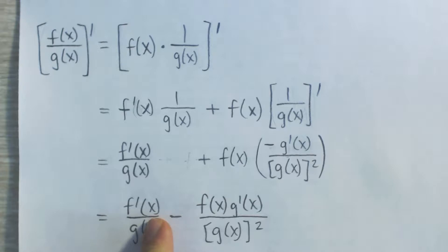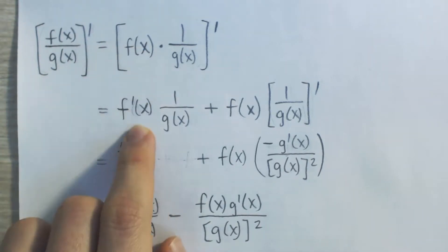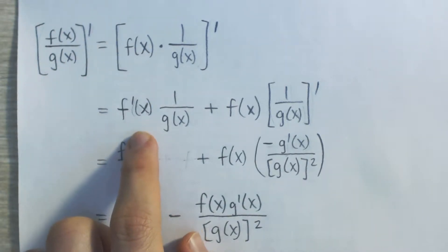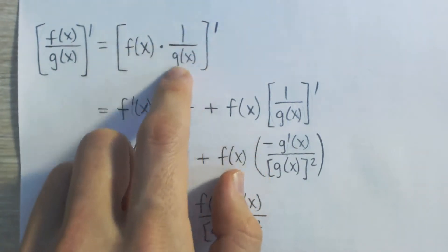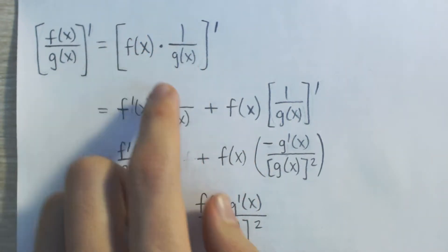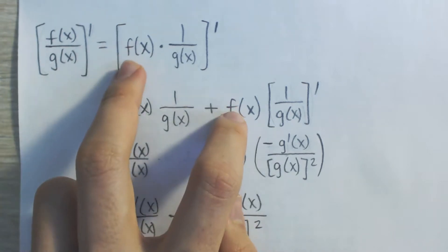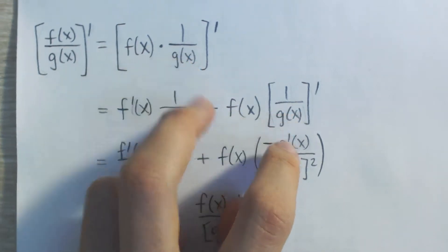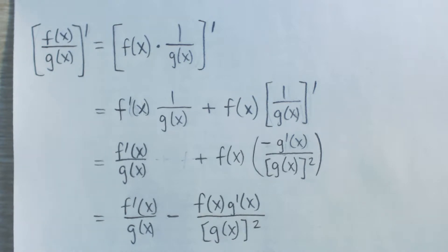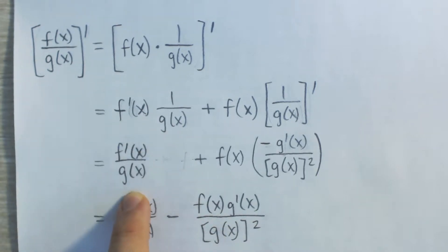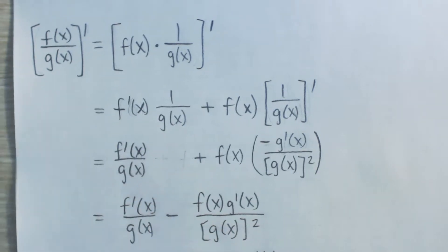We're still taking the derivative of this product of two functions, and by the product rule, it's equal to the derivative of the first function times the second function — so this whole thing is the second function, this is the first function — plus the first function f times the derivative of the second function 1 over g of x. On the left here we just have multiplication, so f prime of x times 1 over g of x equals f prime of x over g of x.